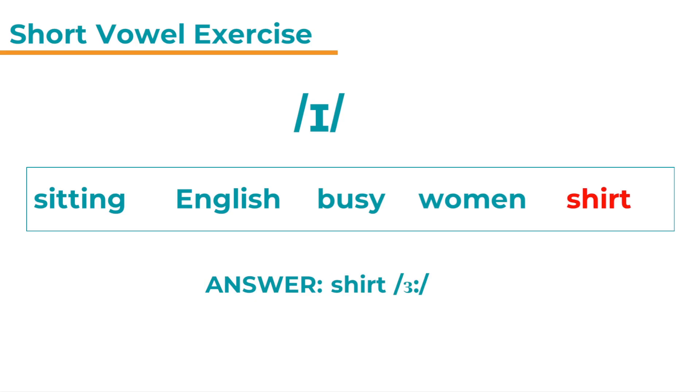And the answer is shirt. Because shirt contains ɜː. And that is a long vowel sound and it's not ɪ. So let's have a look at the other words. I highlighted all the letters representing the ɪ sound. Sitting we have two ɪ sounds. English also two. Busy. I know some of you might think it's buzzy but no, it's an ɪ sound. Busy. And also women. The plural from woman. Women.